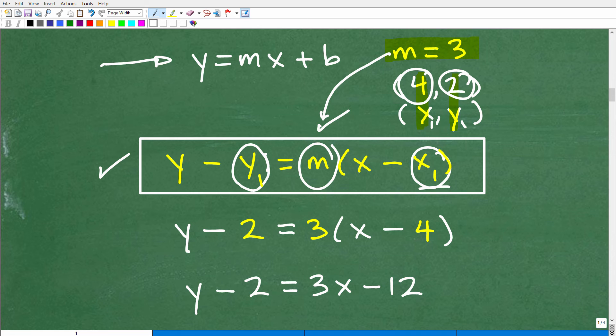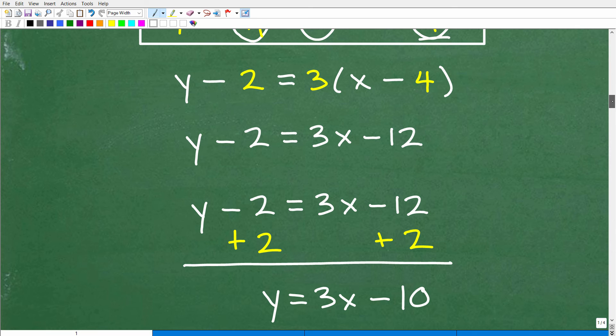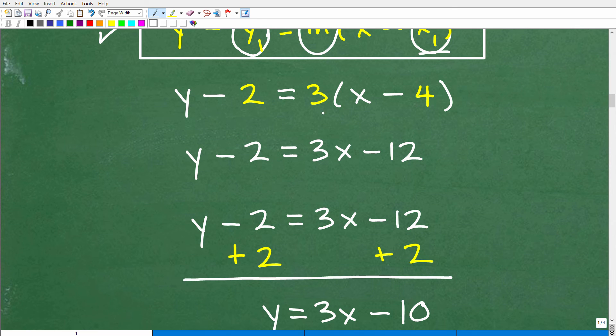Okay. And you can see here, that's exactly what I did. So we have Y minus Y1, which is our 2. Okay. It's equal to 3, which is our slope, times X minus 4. 4 here is our X1. And so we're going to go plug in all the values into the point slope formula. And now we're going to go ahead and simplify.